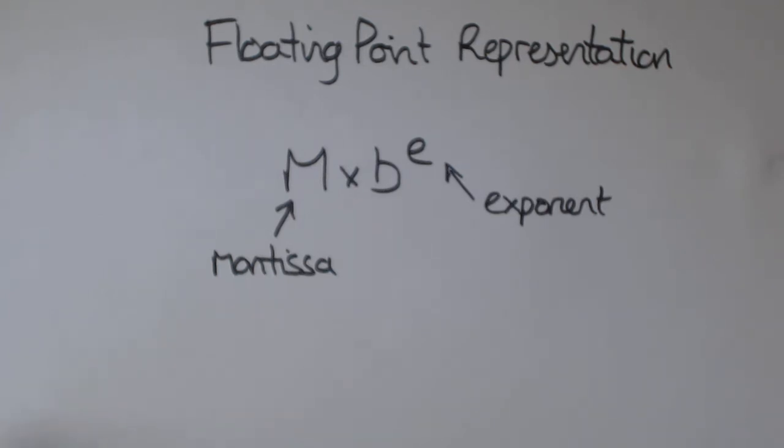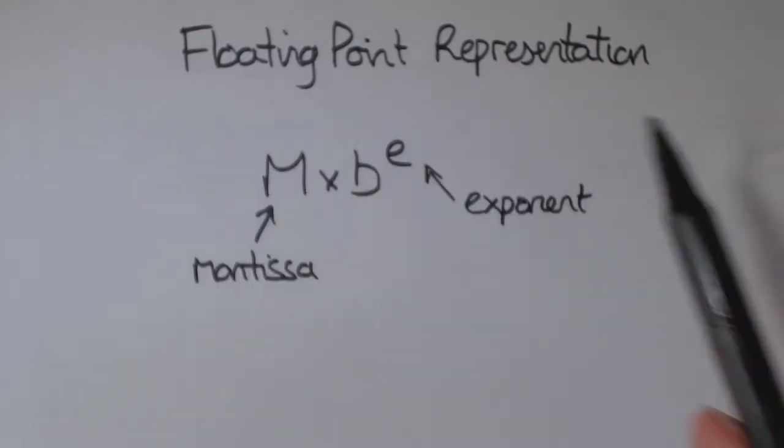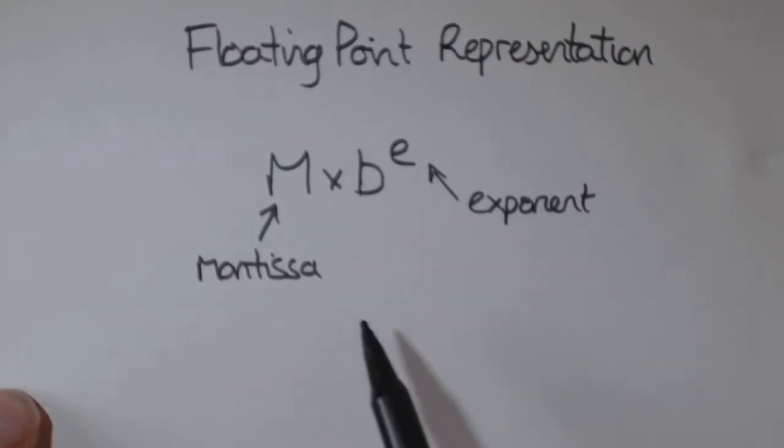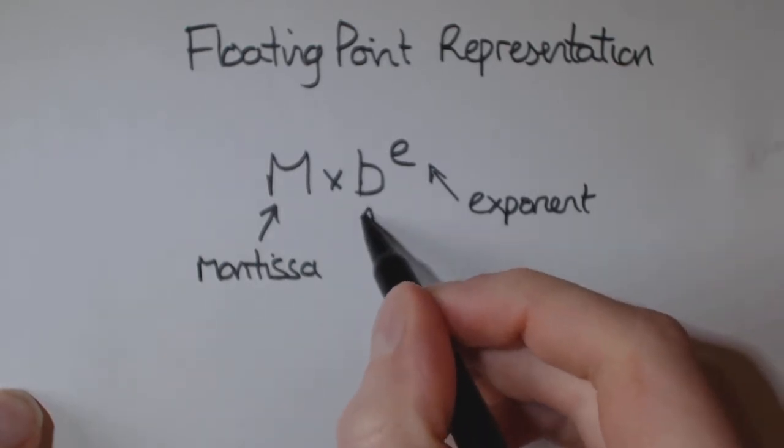Hey, this is a quick video on how we actually store real numbers, so numbers with a decimal point in a computer. It's stored using something called floating-point representation, in which it's broken into the mantissa and the exponent, and this is known as the base.